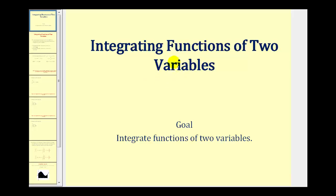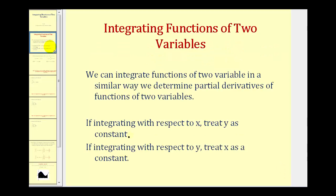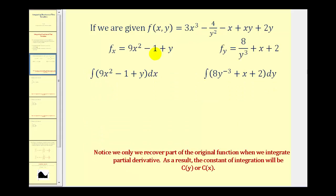Welcome to a lesson on integrating functions of two variables. We can integrate functions of two variables in a similar way we determine partial derivatives of a function of two variables. Meaning, if integrating with respect to x, we'll treat y as a constant, and if integrating with respect to y, we'll treat x as a constant. Let's see what happens when we take a function, find its first order of partials, and then integrate with respect to x as well as with respect to y.